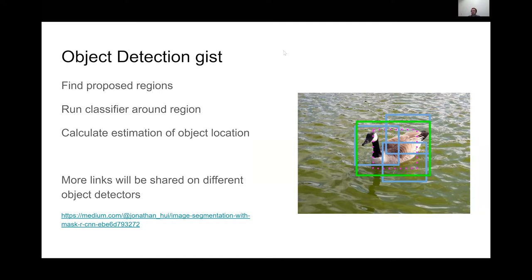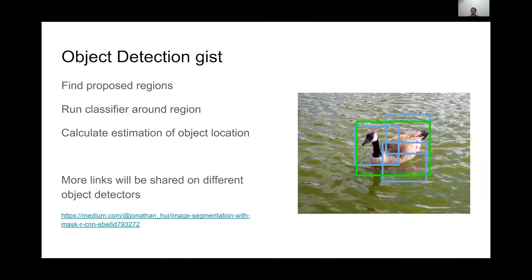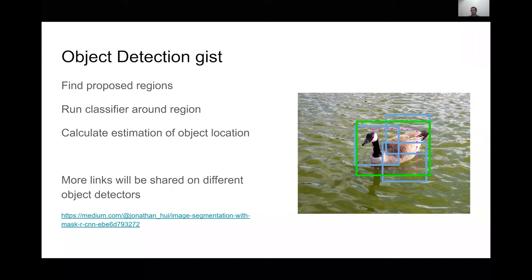Any questions before we get into object detection and training? Someone asked for a link to the generative deep learning book — the title is 'Generative Deep Learning,' which you should be able to find easily on Google or Amazon as the first result.